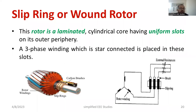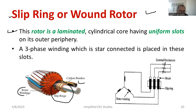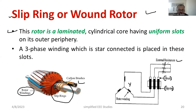The slip ring induction motor is also known as the wound rotor — that is a synonym. In the slip ring type rotor, we can see the slip rings, and we also require a carbon brush, a shaft, and rotor winding. The rotor winding is connected in star fashion and is directly connected to the slip rings. Through the brushes, the rotor is connected to external resistance.